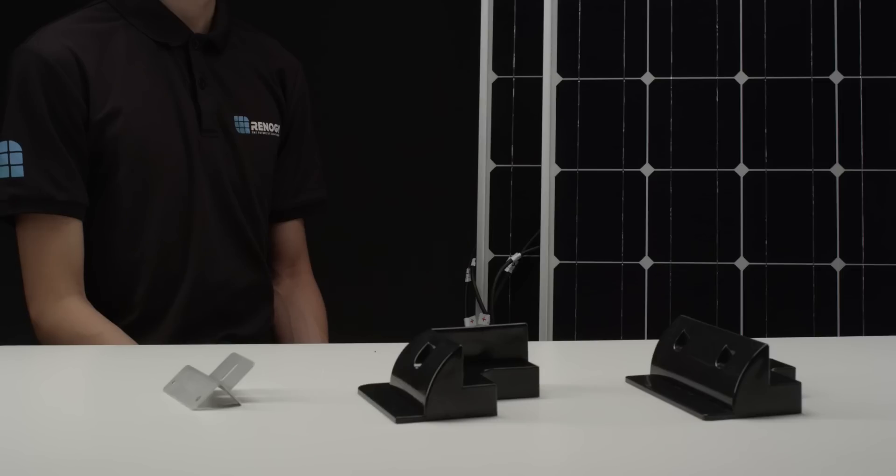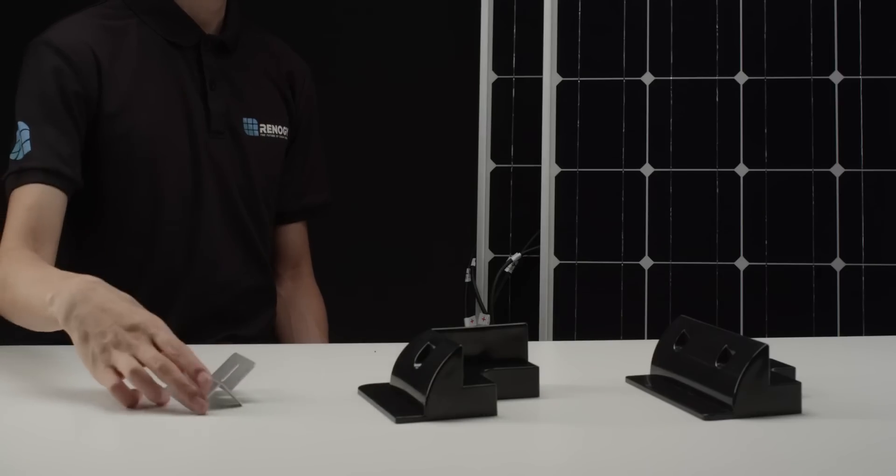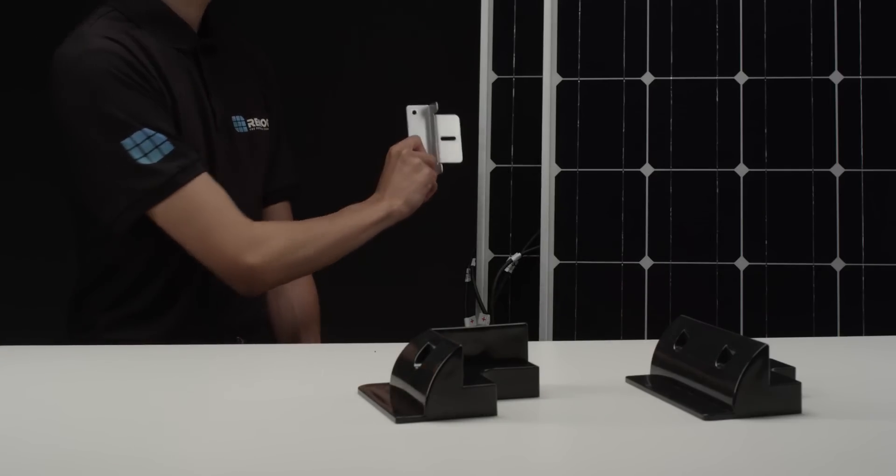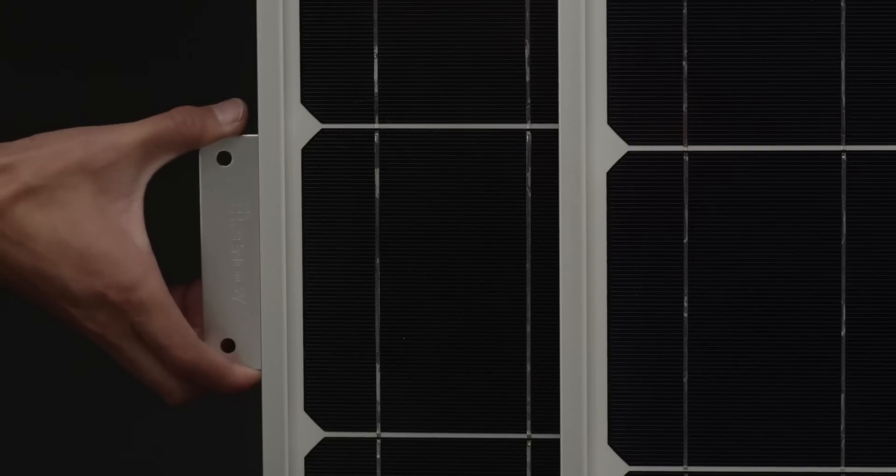The last step is to attach the respective mounting component in your RV kit. For the purposes of this video we will show both. First is the Z brackets which is for mounting on roofs. We'll attach one for demonstration purposes and the rest of the Z brackets will be attached the same way.